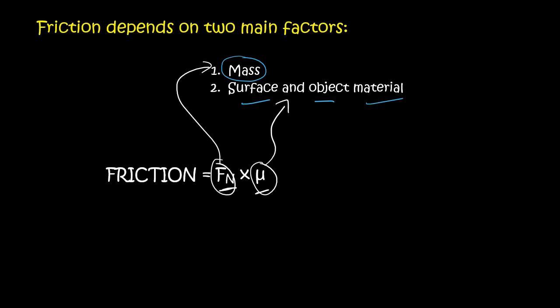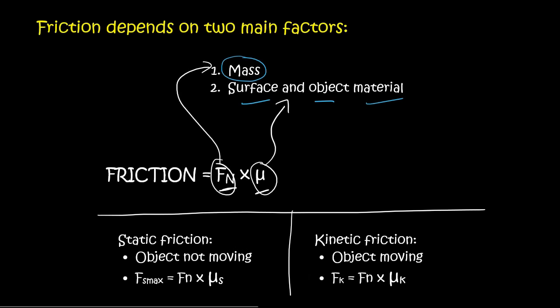Now, remember, there are two types of friction: static and kinetic. And so here they are. Static friction, object is not moving. I'll explain this formula now. And then kinetic friction is when the object is moving. So the K is just for kinetic, and the F is for friction. So it's force of kinetic friction.